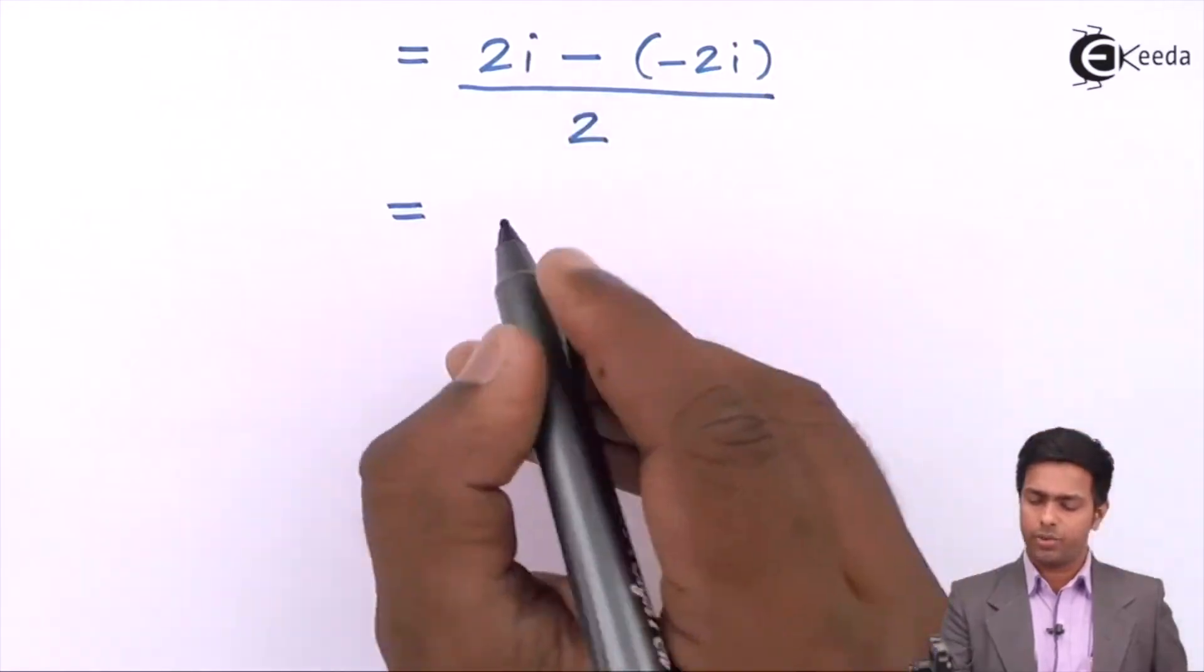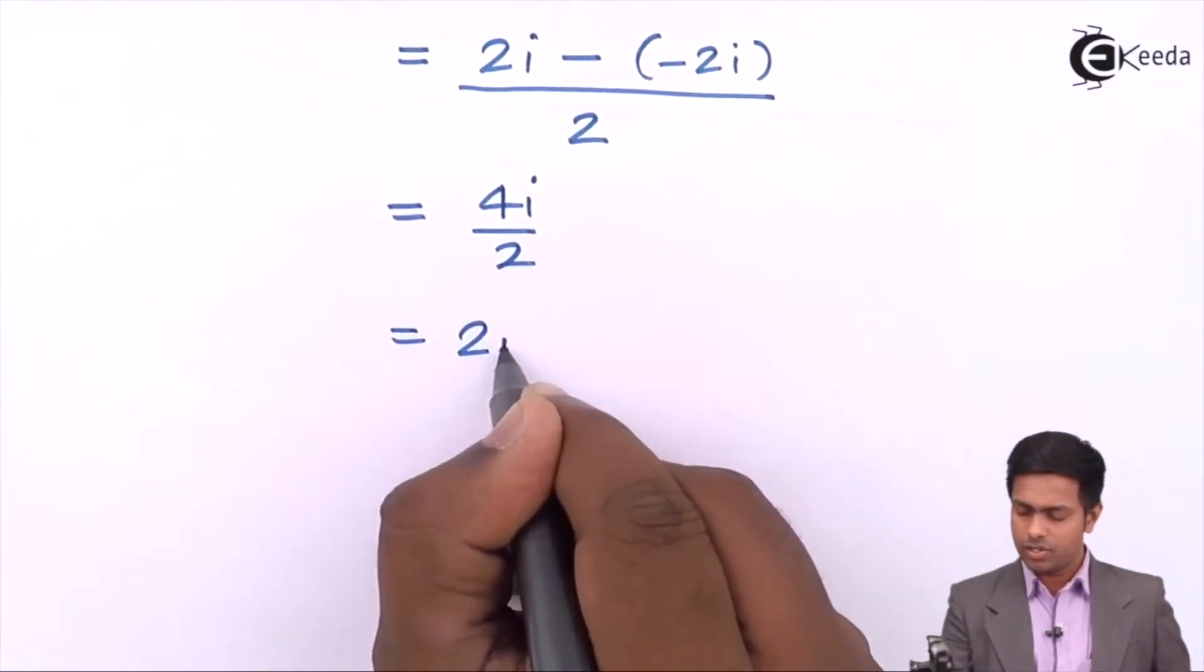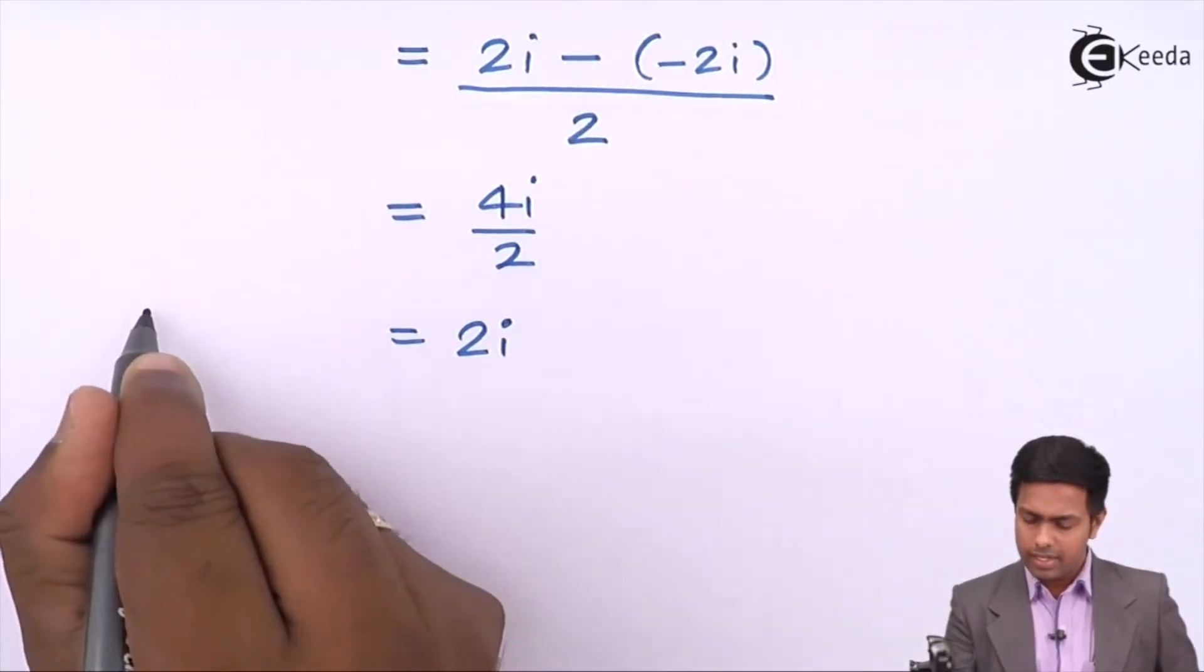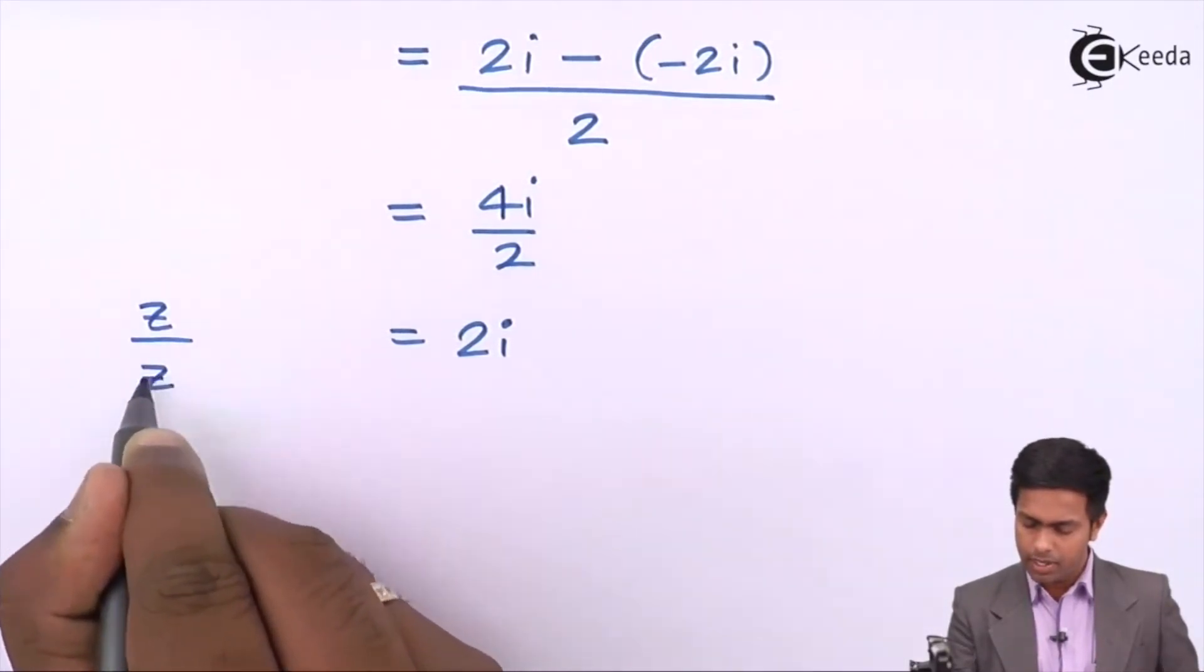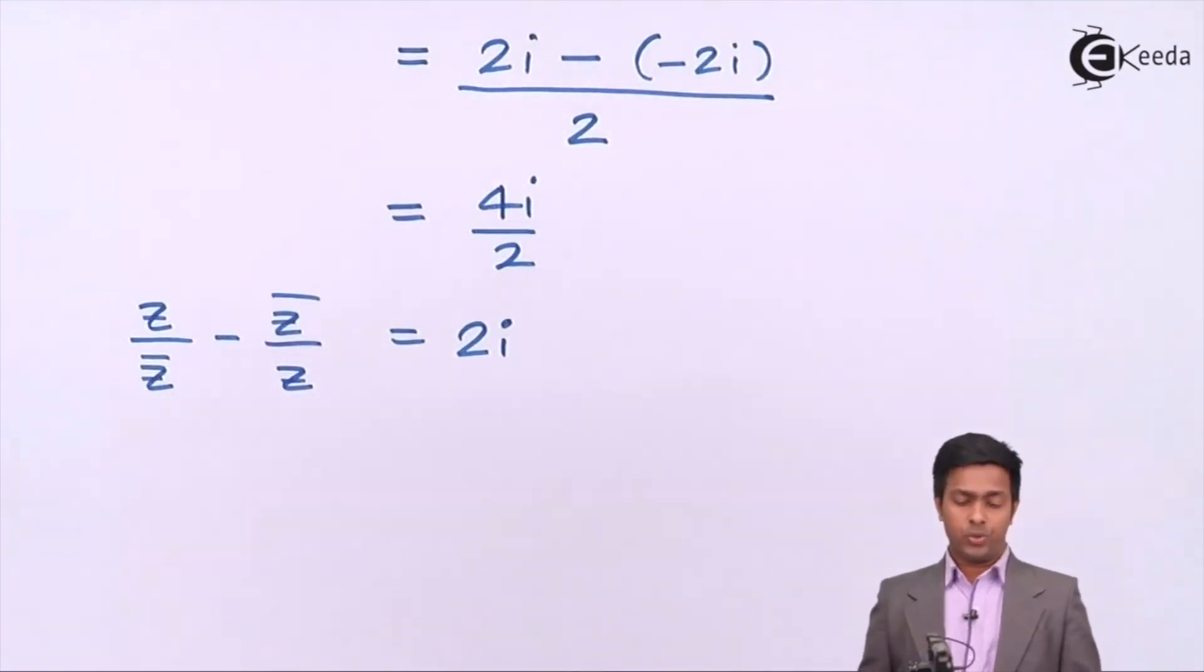Now let's solve this. Minus minus plus 2i, 2i gives 4i upon 2, and this will give us 2i. So the value of z upon z bar minus z bar upon z is equal to 2i.